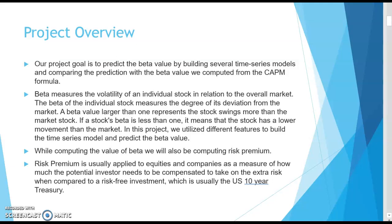If a stock's beta is less than 1, it means that the stock has a lower movement than the market. For example, if a particular stock has a beta of minus 0.5, this means that if the stock market goes up by 1 percent, the return on that particular stock will go down by 0.5 percent. A cryptocurrency is a prime example of a stock whose beta is less than 1.